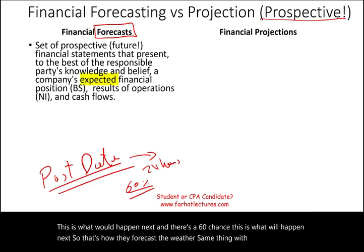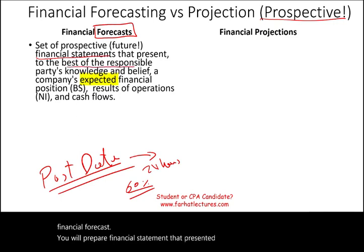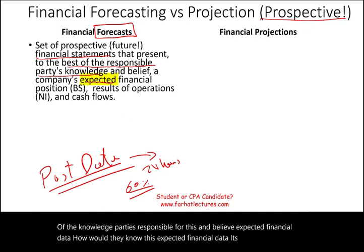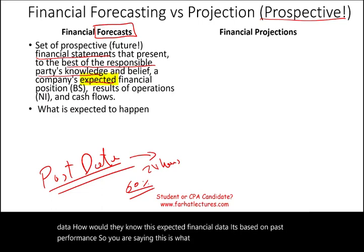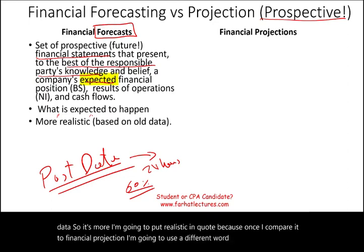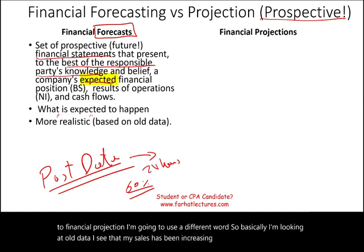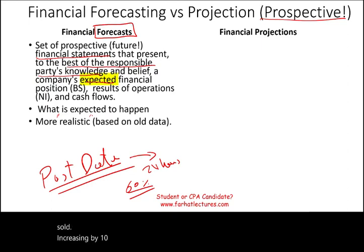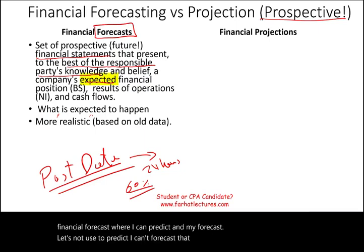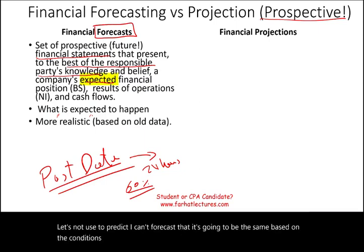The same thing applies to financial forecast. You prepare financial statements that present, to the best knowledge of the responsible parties, the expected financial data. How would they know this? It's based on past performance. So you are saying this is what I expect to happen based on old data. For example, I see that my sales and cost of goods sold have been increasing by 10 percent for the past three years. I can make a financial forecast that it's going to be the same, based on current conditions.